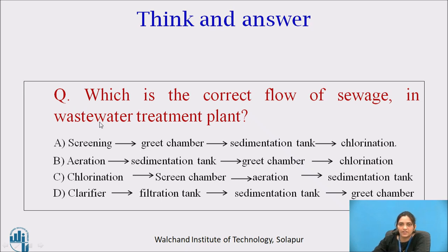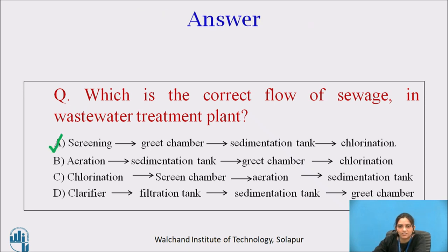Now pause the video here and answer the question: which is the correct flow of sewage in a wastewater treatment plant? There are four options — four flow charts. Select the correct flow chart of wastewater treatment. The answer is: the first option is the correct option — first screening, then grit chamber, then sedimentation tank, and then chlorination.